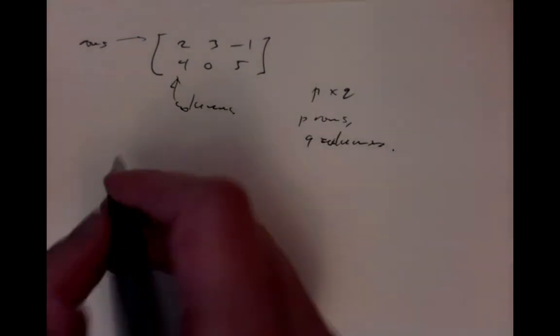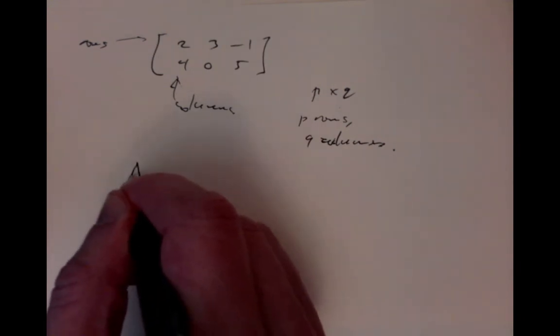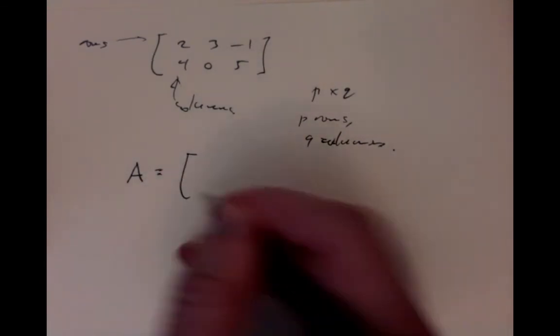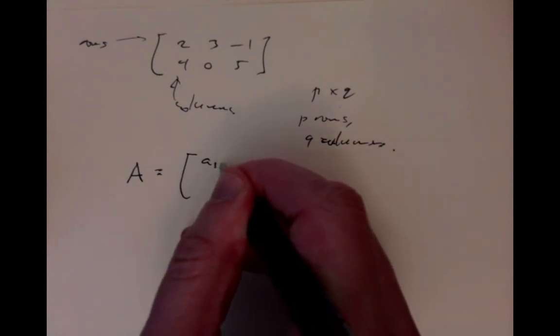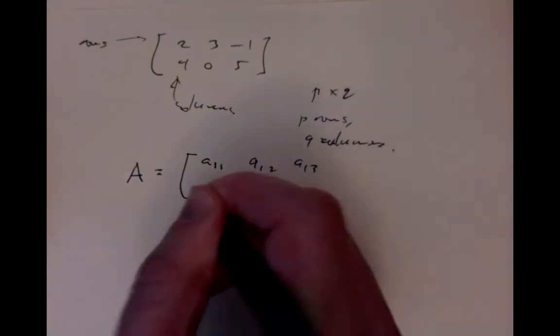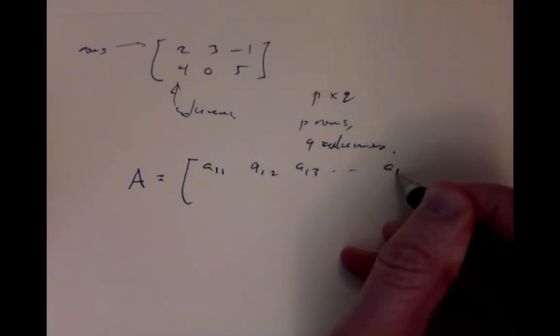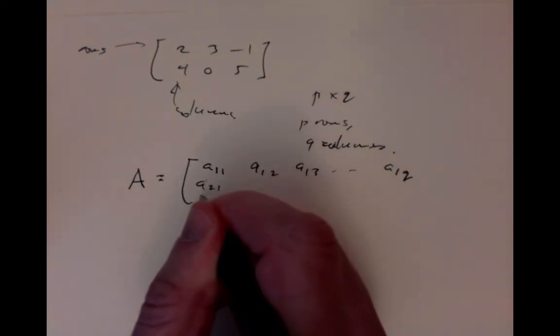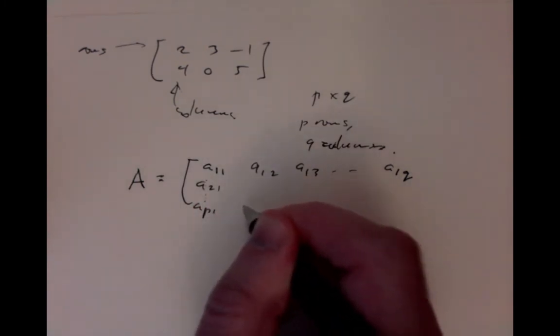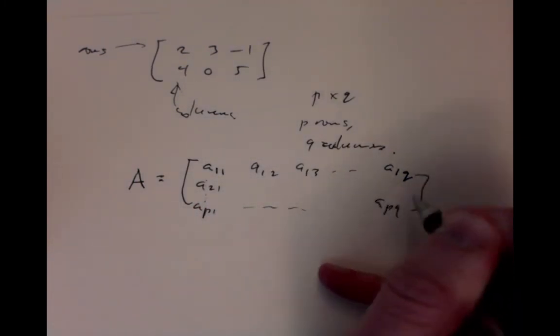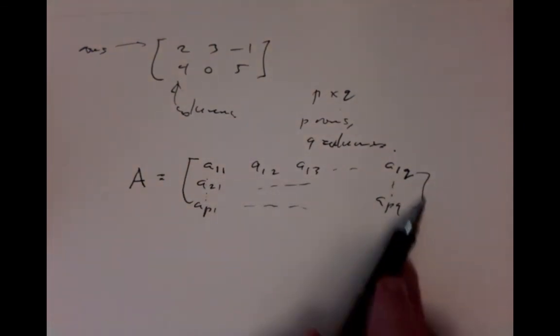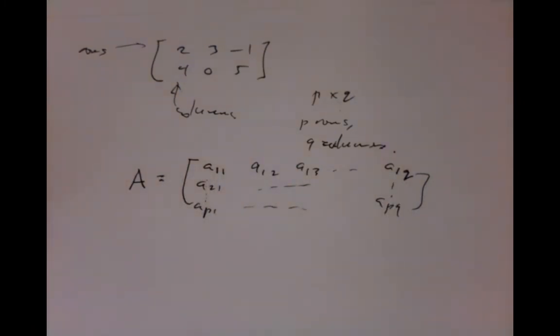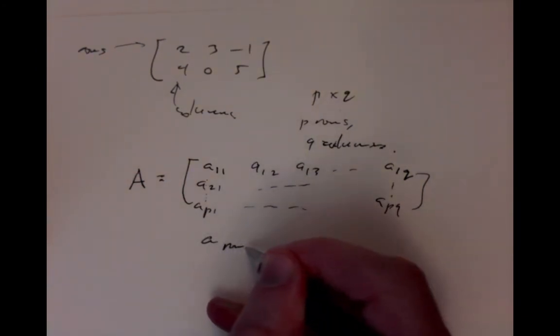If we have to specify a matrix symbolically, we'll use usually a capital letter for its name. And following the lecture notes, we'll write its entries using a small letter with indices: a11, a12, a13, and so on. As many as there are, a1q columns. This will be a21...ap1...apq. So its entries are written out something like this, with various dots to indicate the various rows and the various columns. So it's a sub row column.